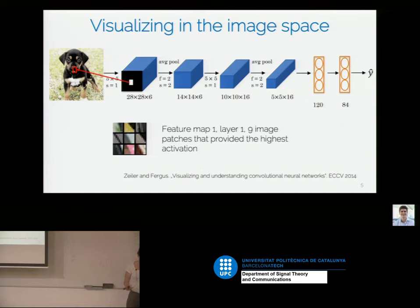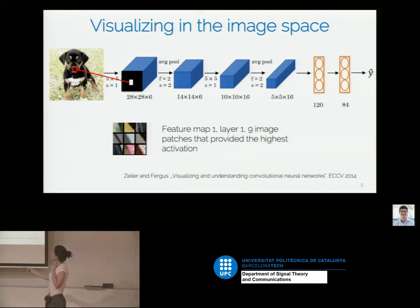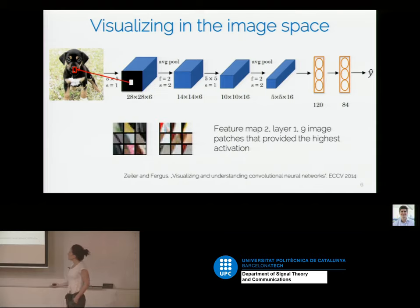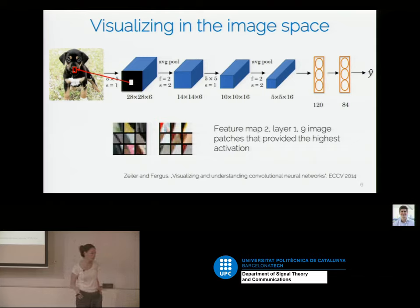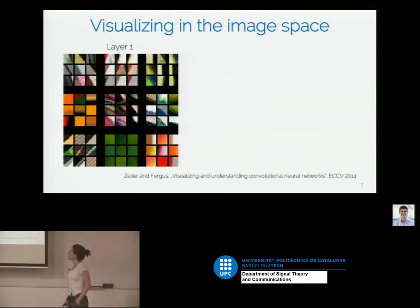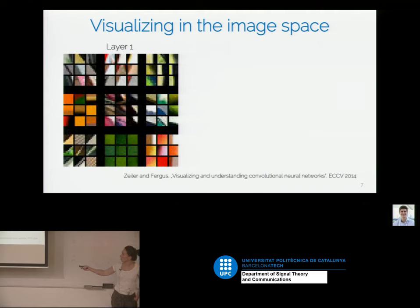For example, for Feature Map 1 of Layer 1, you obtain nine image patches from training images and see they all share a diagonal feature — so this filter is a diagonal edge detector. Looking at another feature map in Layer 1, the diagonal has changed, appearing more triangular. Observing different channels of Layer 1 shows they focus on different image features, ranging from edges to smoother green patches.